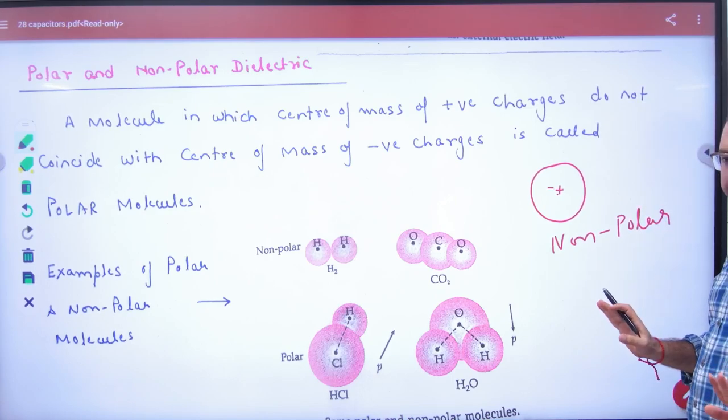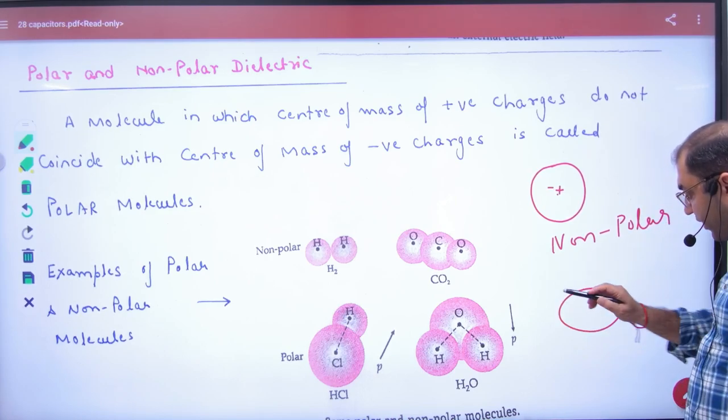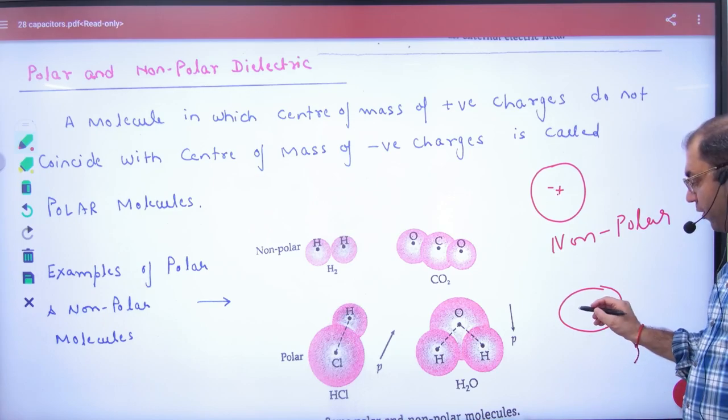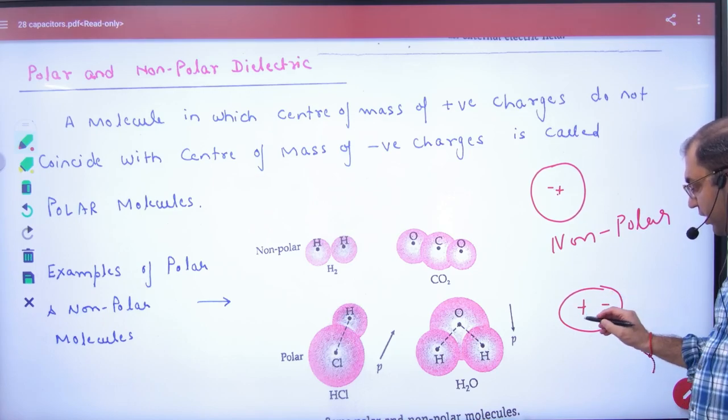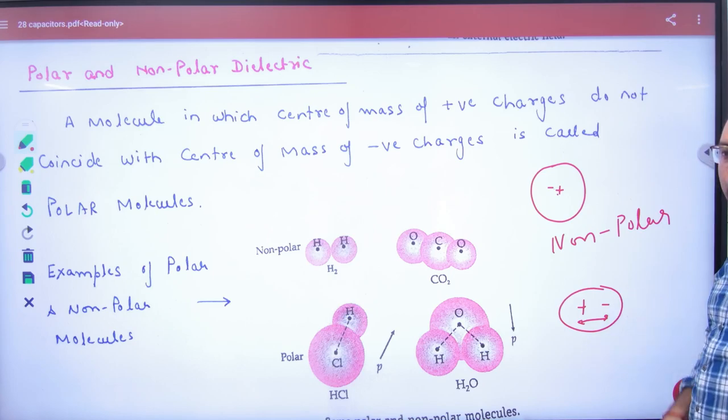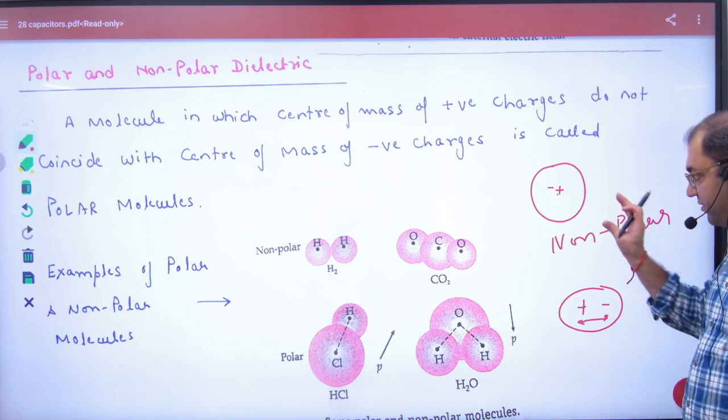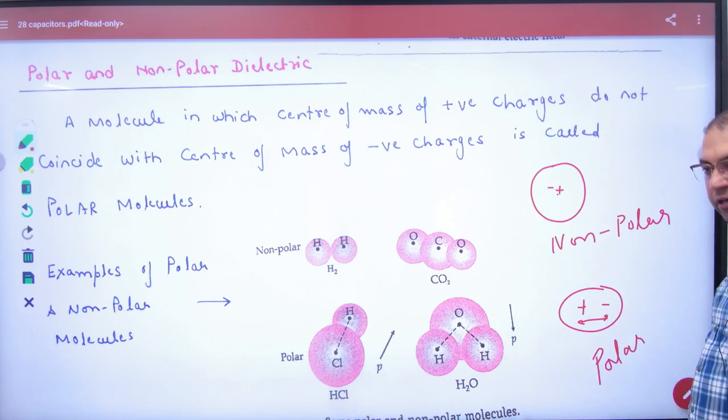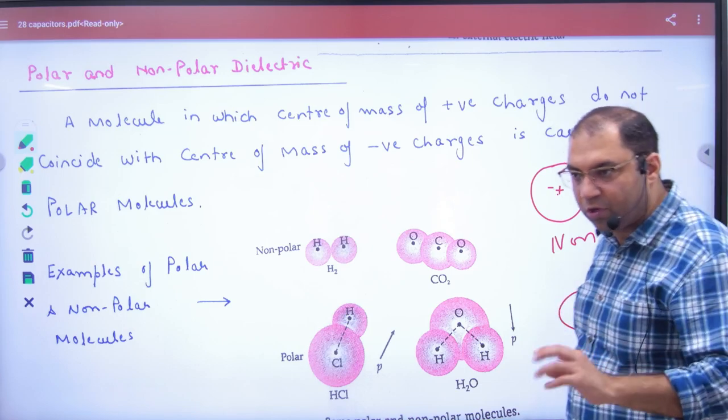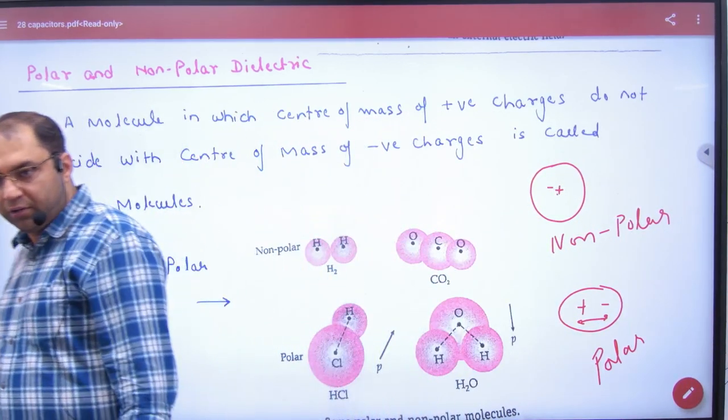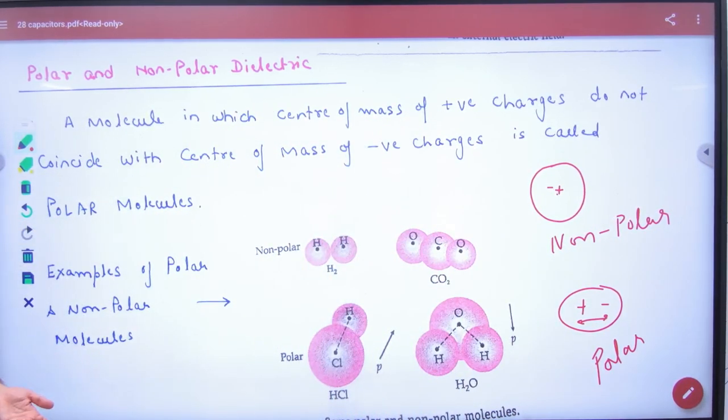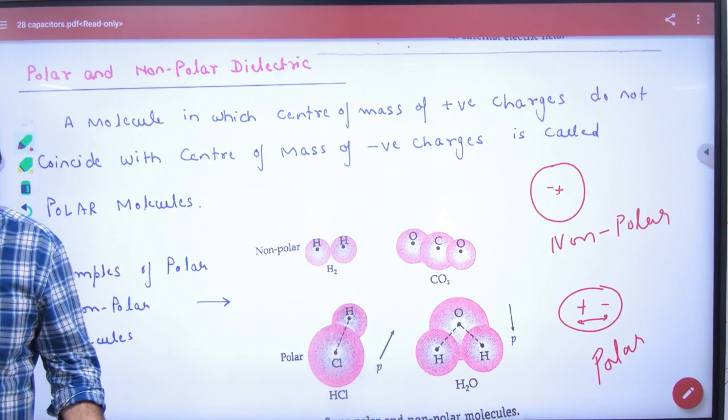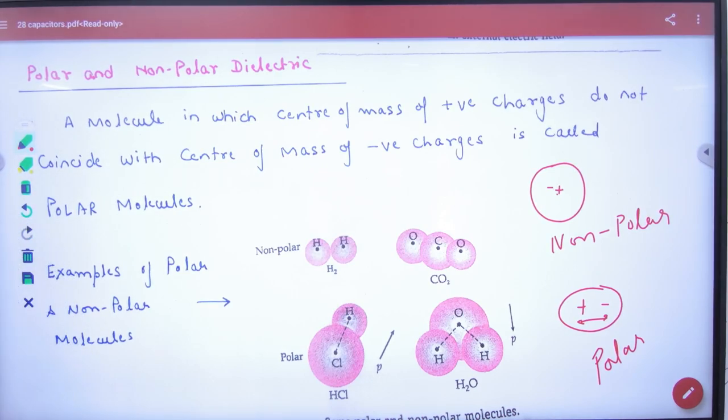But some atoms by nature are like this, which has a positive charge here, then the negative charge is here. So there will be some distance. A dipole moment will be present. What do we call this type of atoms? Polar. This is nature. We are studying nature, and nature is physics.